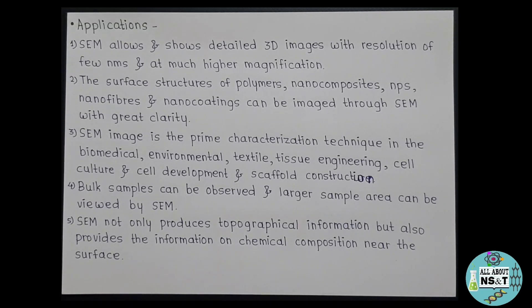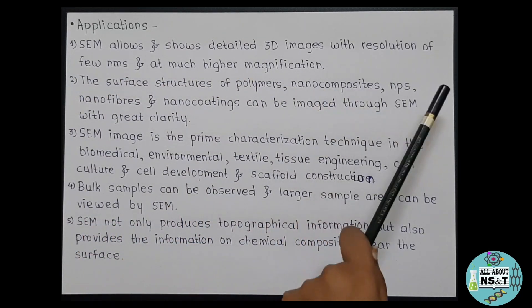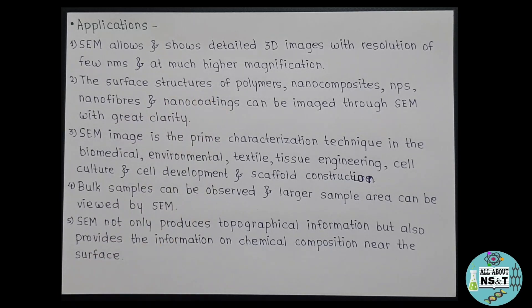Now lastly, let's have a look at some of the applications of SEM. First, SEM allows and shows detailed 3D images with resolution of few nanometers and at much higher magnification. Second, the surface structures of polymers, nanocoatings, nanoparticles, nanofibers, and nanocomposites can be imaged through SEM with great clarity. Third, SEM image is the prime characterization technique in the biomedical, environmental, textile, tissue engineering, cell culture, and cell development and scaffold construction. Bulk samples can be observed and larger sample area can be viewed by SEM. SEM not only produces topographical information but also provides the information on chemical composition near the surface. So these were the few applications of SEM.